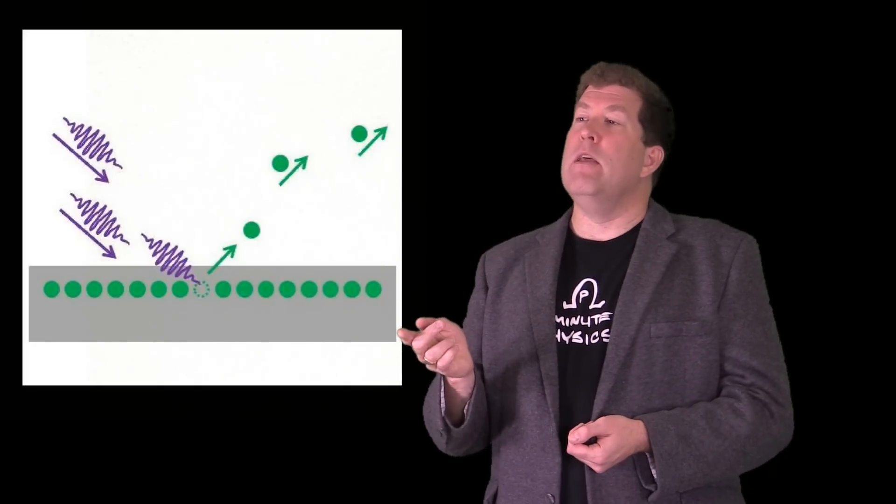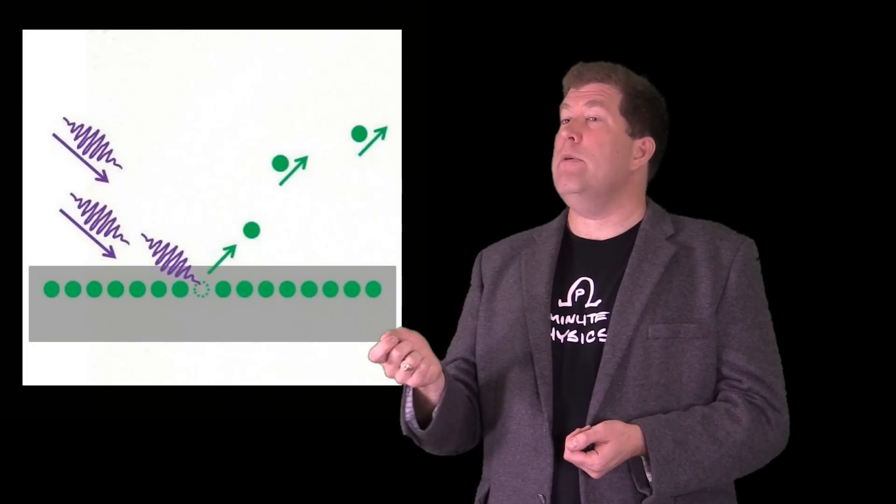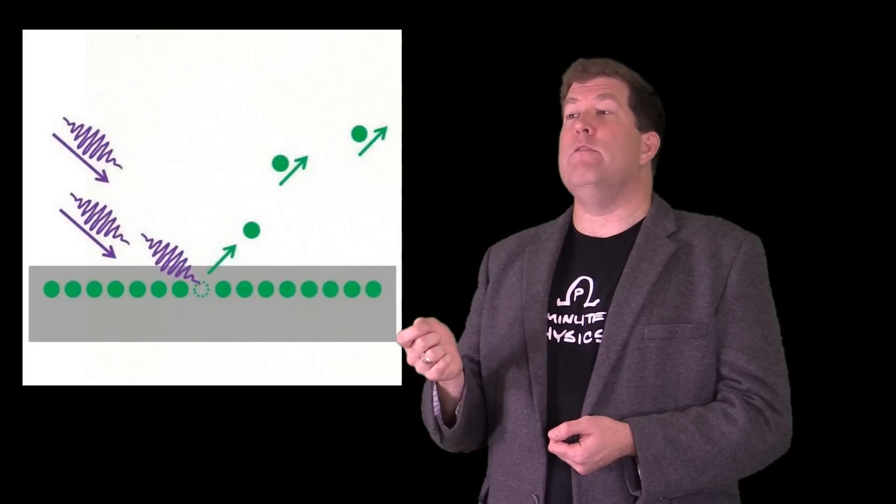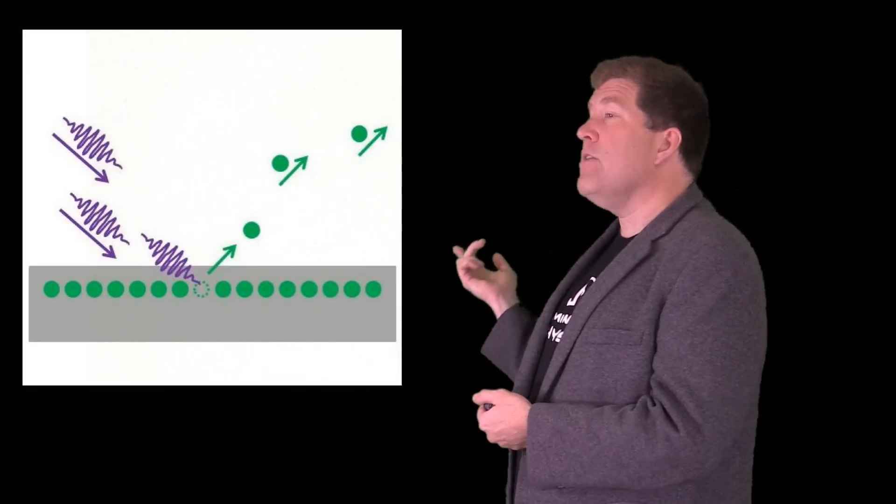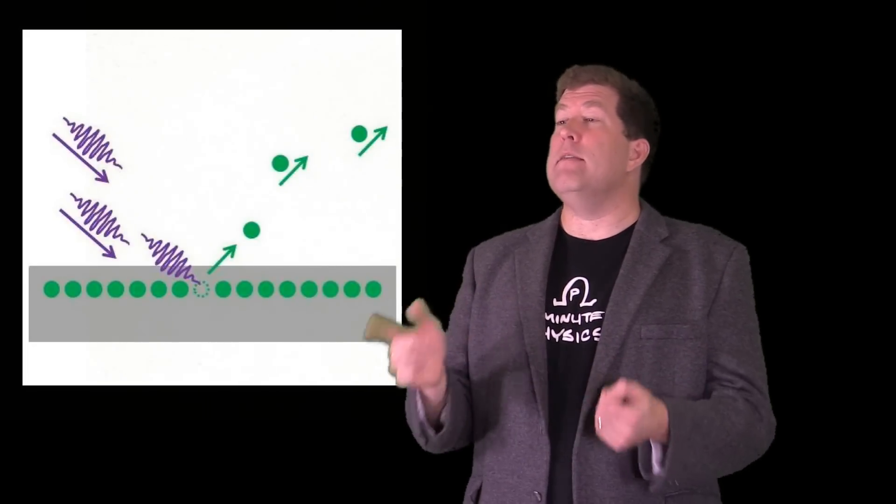This is a radical suggestion. Einstein himself called it the only truly revolutionary thing he did in his career. But it works brilliantly to explain the way that light knocks electrons out of metals. Even people who hated the idea had to admit that Einstein had a point.